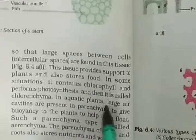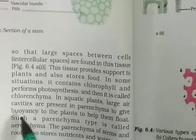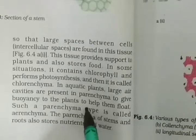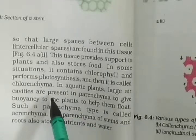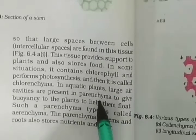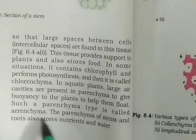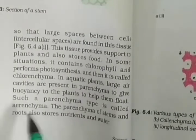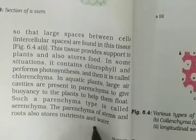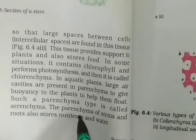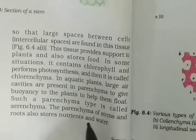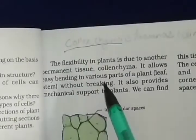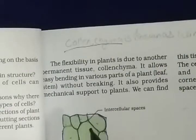In aquatic plants, large cavities are present in parenchyma to give buoyancy and help plants float. Such a parenchyma type is called aerenchyma. The parenchyma of stems and roots also stores nutrients and water.